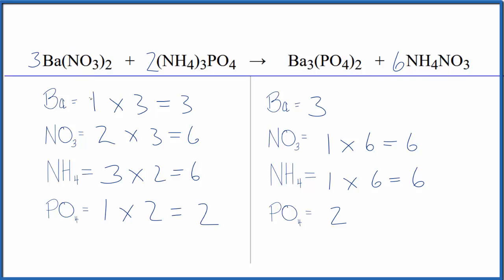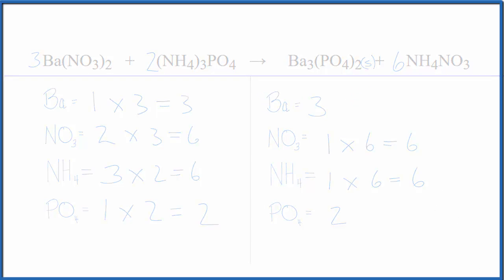This is Dr. B with the balanced equation for Ba(NO3)2 plus (NH4)3PO4. Note that this barium phosphate is going to be a solid, so this will be the precipitate. Everything else is aqueous. Thanks for watching.